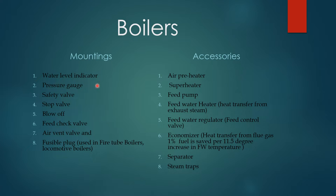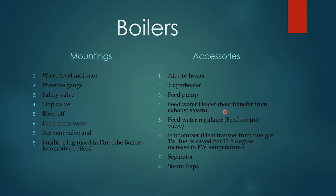The mountings include: water level indicator, pressure gauge, drum pressure gauge, pressure safety valve, main steam stop valve, blow-off valve, feed cock, check valve, air vent valve, and fusible plug — normally used in fire tube or locomotive boilers. Accessories include air preheater, superheater, feed water pump, and feed water heater, where heat transfer is from exhaust steam.